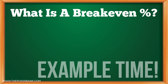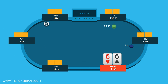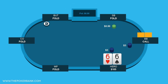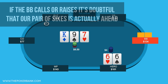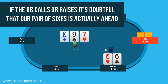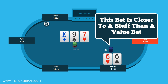Let's look at an example to make things more tangible. In this hand we raise from early position with 6s, folds around to the big blind who calls, and we see a heads-up flop of King-9-7. The big blind checks and we continuation bet for $4. Even though we have a pair in this hand, it's doubtful to be ahead of the big blind's range if he calls or raises us, so we can rightfully assume that our bet here is closer to a bluff than a value bet.